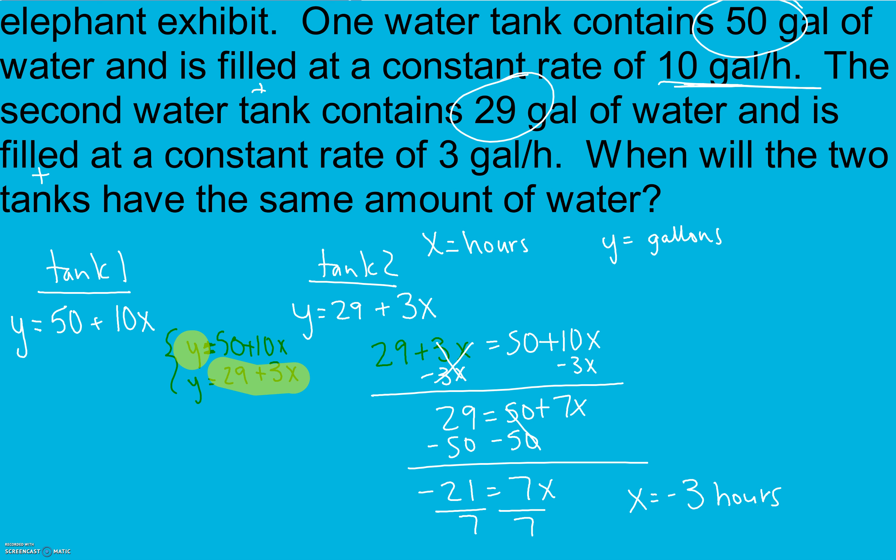So when will these two have the same amount of water? Negative 3 hours. Check. Does that answer make sense? No. We can't have negative amounts of hours. So this is never going to happen. And I know some of you are saying, well, eventually it'll just keep overflowing and they'll both be completely full. But that's not what we're looking for here. We're looking for when at the same time will they be the same rate. So when will the same amount of water have been pumped into these tanks? And that's never going to happen because the tank one will always have pumped more water into the tank. Even if they're both the same size and overflowing, it's still never going to be the same.